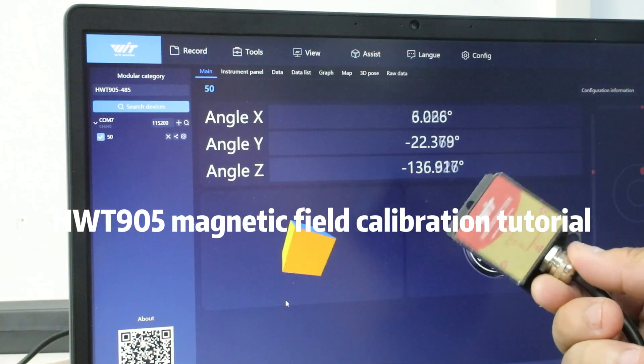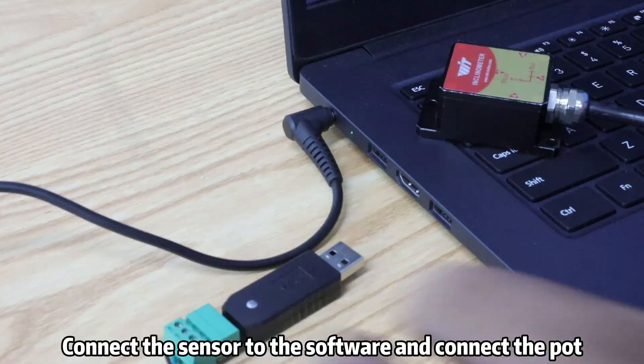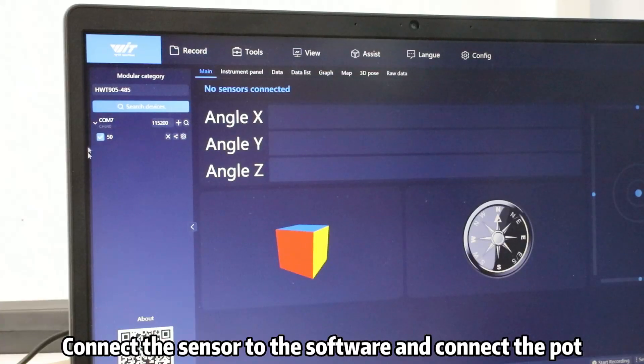HWT905 Magnetic Field Calibration Tutorial. Step 1: Connect the sensor to the software and connect the ports.